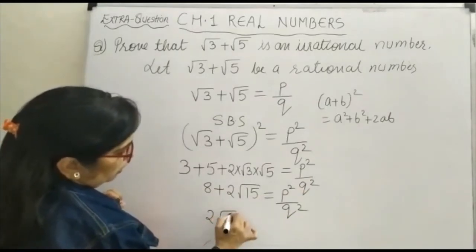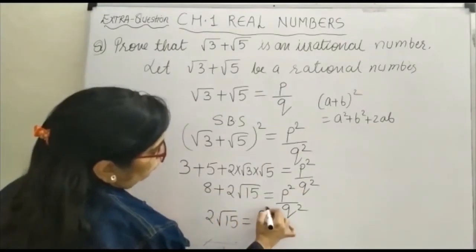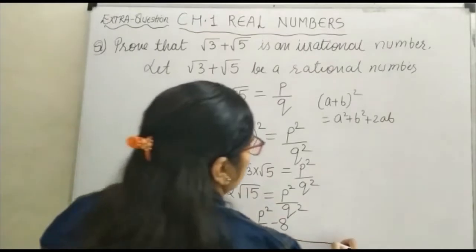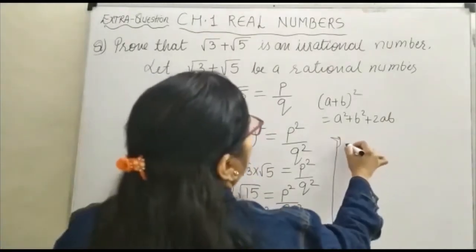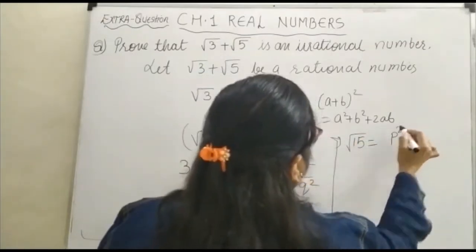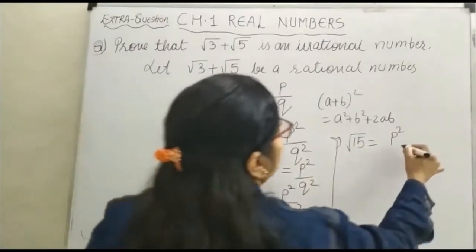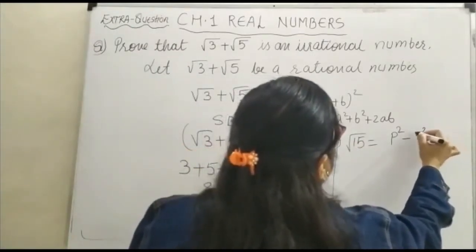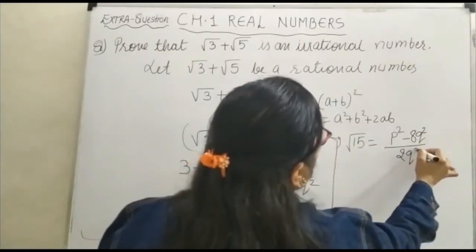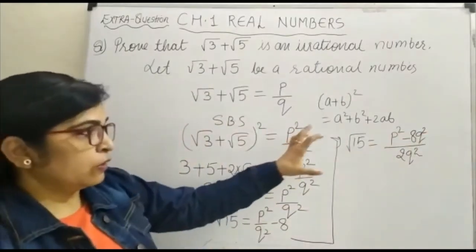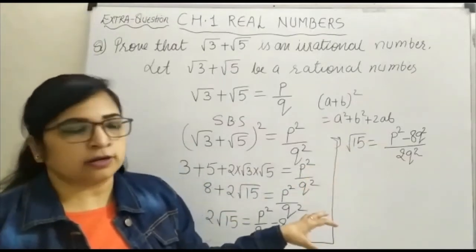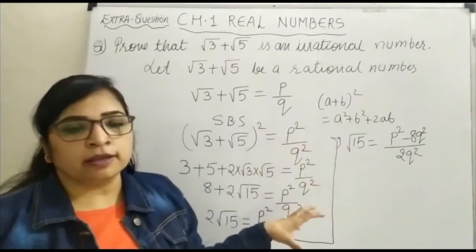Now, 2√15 = P²/Q² − 8. Taking the LCM on the right-hand side, √15 = (P² − 8Q²) / 2Q². You can see that on the right-hand side we are having a rational number, and on the left-hand side we are having an irrational number, as √15 is an irrational number.